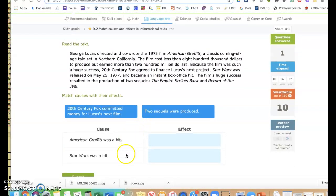This time I'm given the causes again, and then I have to identify the effects. It says George Lucas directed and wrote the 1973 film American Graffiti, a classic coming-of-age tale set in Northern California. The film cost less than $800,000 to produce, but earned more than $200 million. Because the film was such a huge success, 20th Century Fox agreed to finance Lucas' next project. Star Wars was released on May 25th, 1977, and became an instant box office hit.